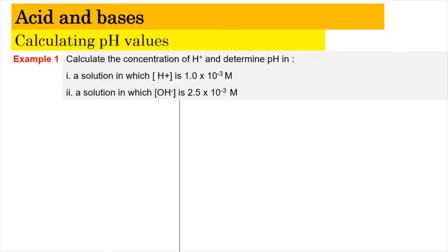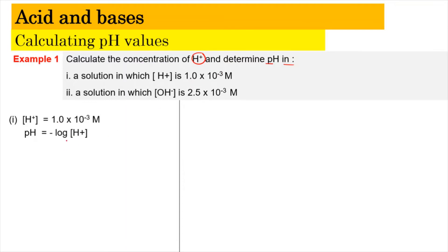Example 1: Calculate the pH of a solution where the concentration of H⁺ is 1.0 × 10⁻³ mol/L. To find pH, we use pH = −log[H⁺], substituting 1.0 × 10⁻³ directly. Putting that into the calculator gives a pH of 3.